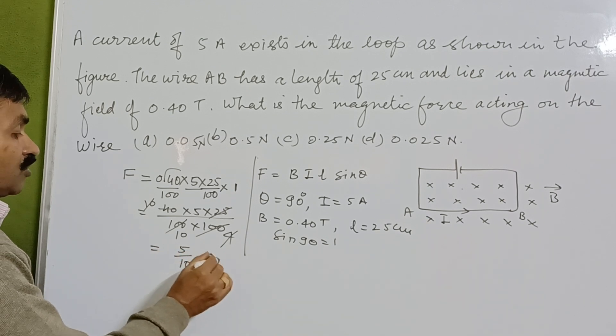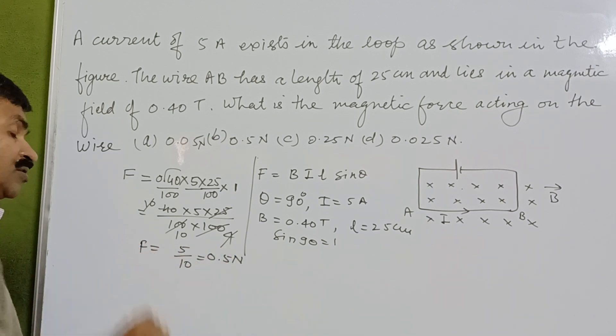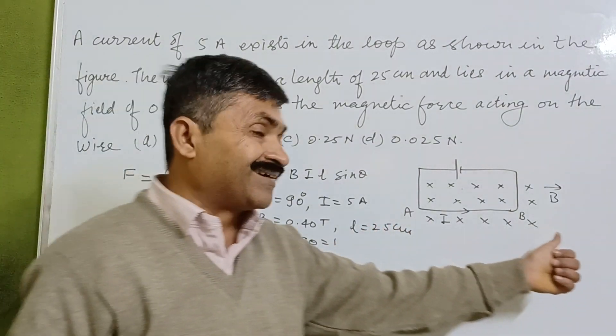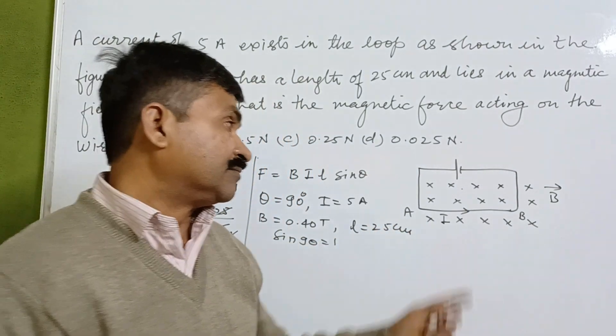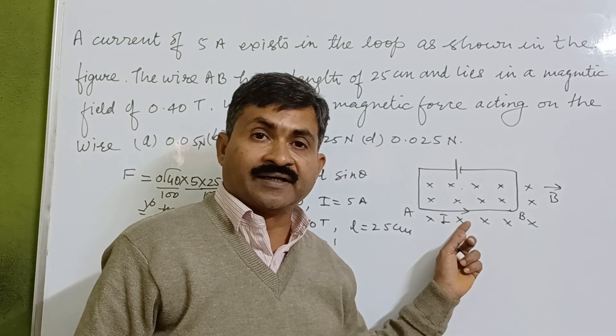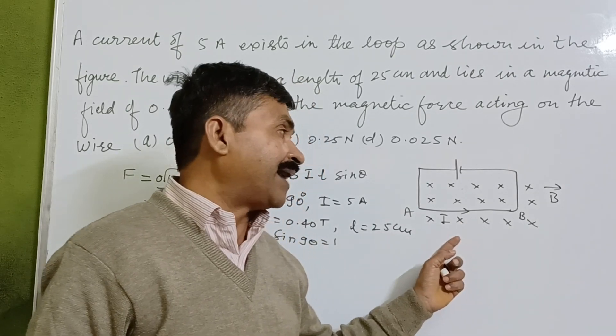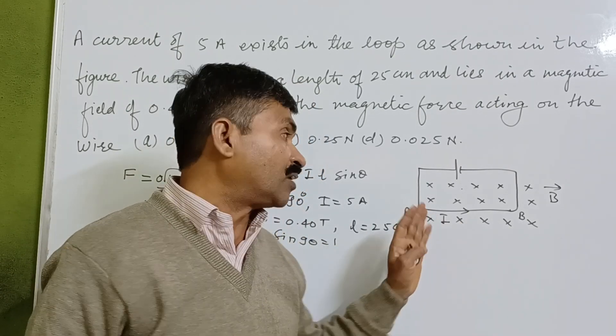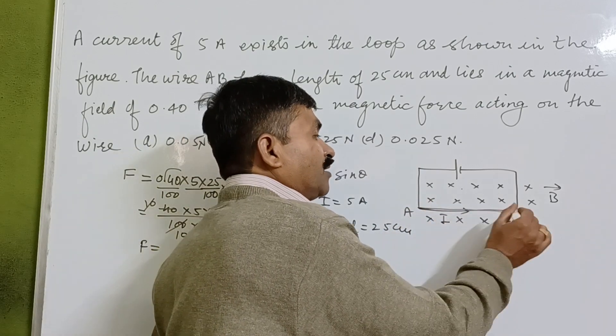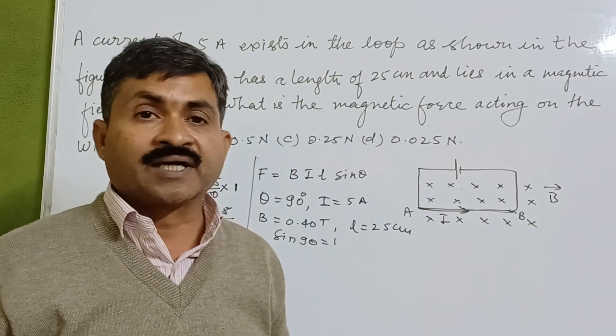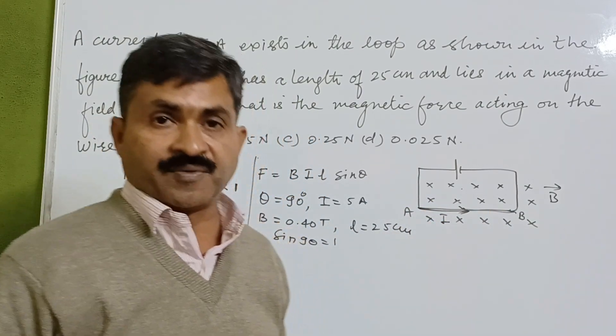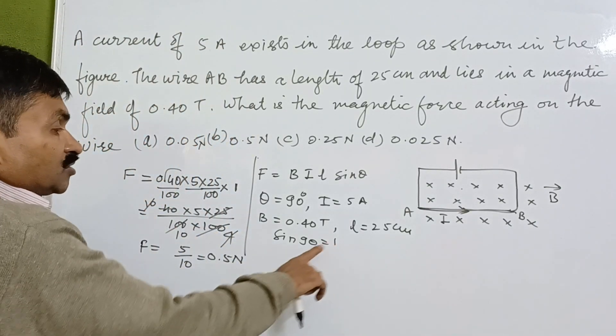This equals 0.5 Newton. This is the force acting on the current-carrying conductor placed in the magnetic field. Since the magnetic field direction and conductor direction are perpendicular, we use sin(90°) = 1 to determine the force.